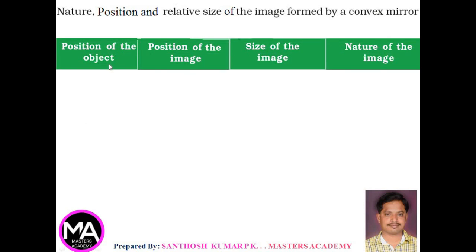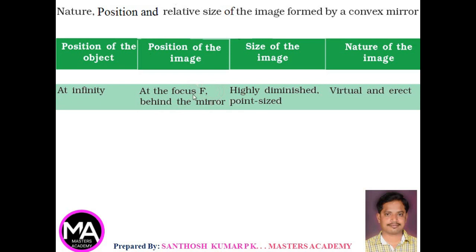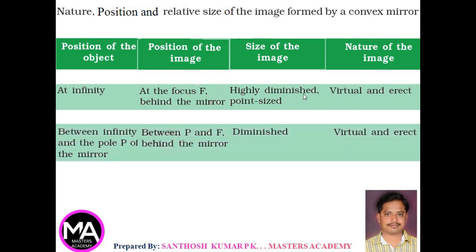Summary of image formation by convex mirror: whenever an object is at infinity, the image is formed at the focus behind the mirror — highly diminished, point-sized, virtual and erect. When the object is between infinity and the pole, the image is formed between P and F behind the mirror — diminished, virtual and erect.